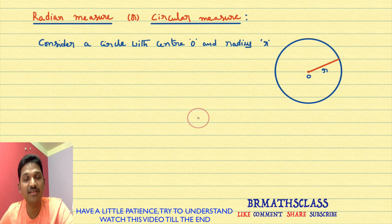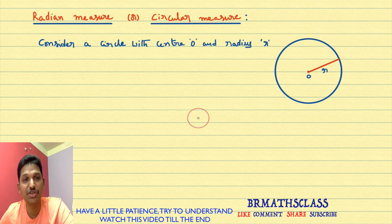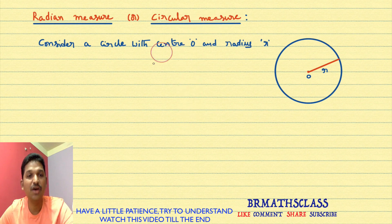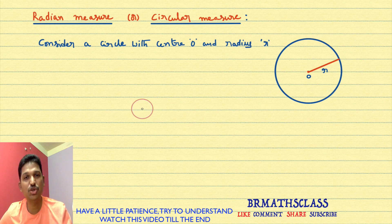In fourth class, we will learn what is radian measure. This is a very very important measure of an angle. Radian measure is also known as circular measure. Now we will learn the definition of radian.